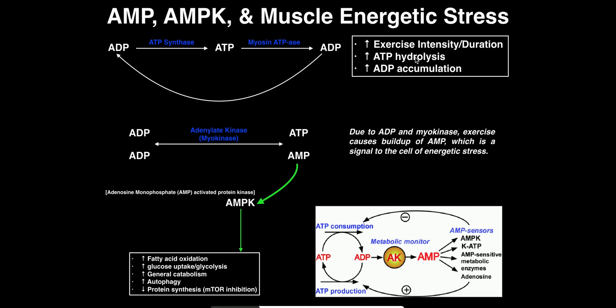ATP hydrolysis is going to be higher with increasing exercise intensity and duration, and that's also going to cause adenosine diphosphate or ADP to accumulate. Now that ADP can be rephosphorylated by ATP synthase to make ATP, but in skeletal muscle in particular it has another purpose. When this ADP accumulates, two molecules of ADP can come together and react with this enzyme, which in most biochemistry textbooks is referred to as adenylate kinase, but usually in the context of exercise physiology it's referred to as myokinase, because one of the most important applications of this kinase is in muscle.